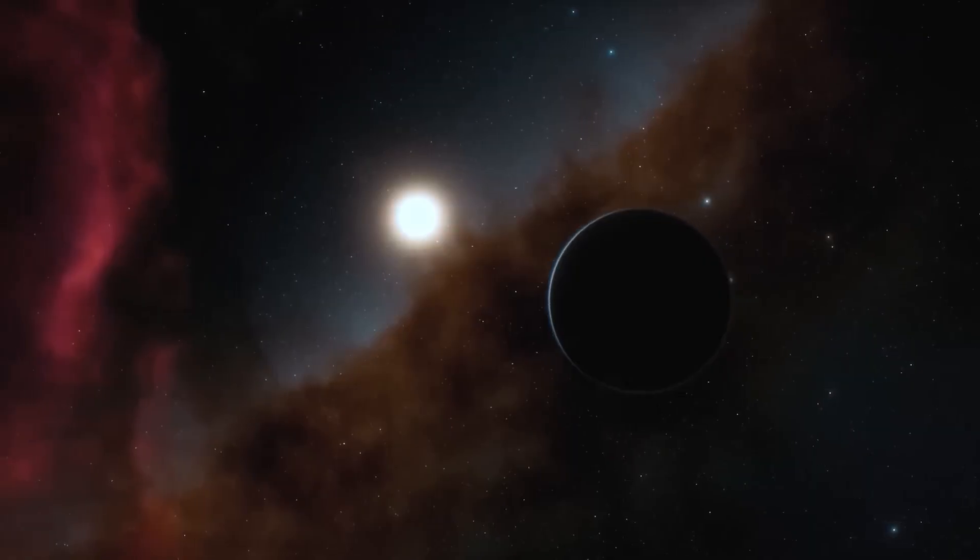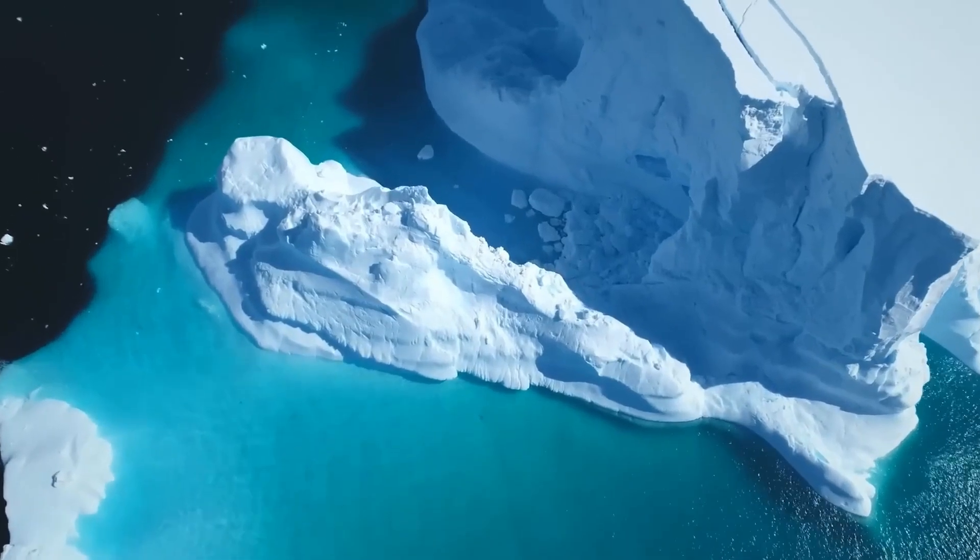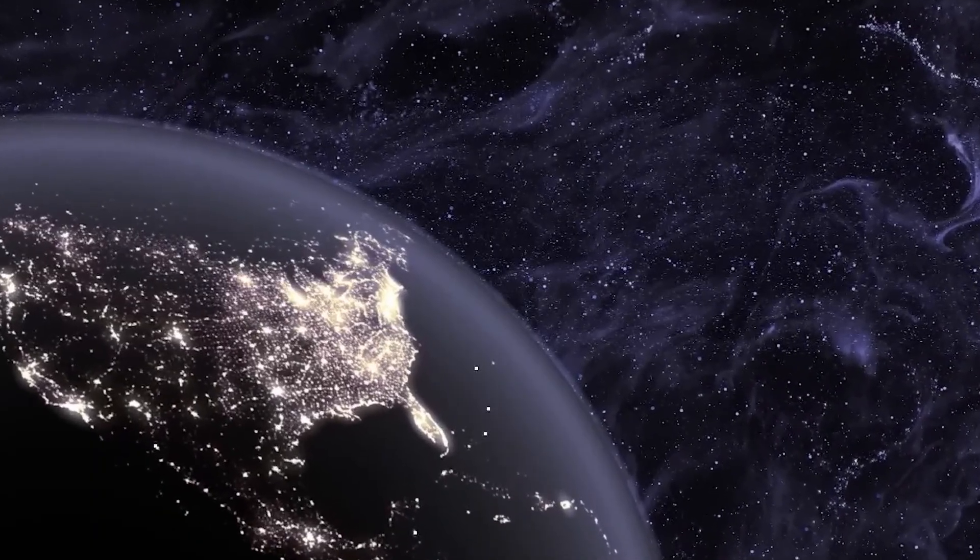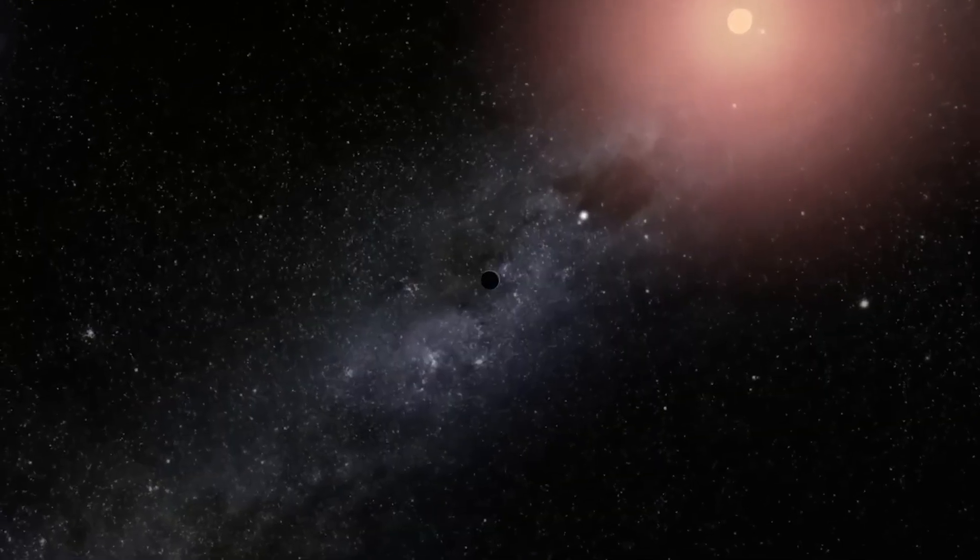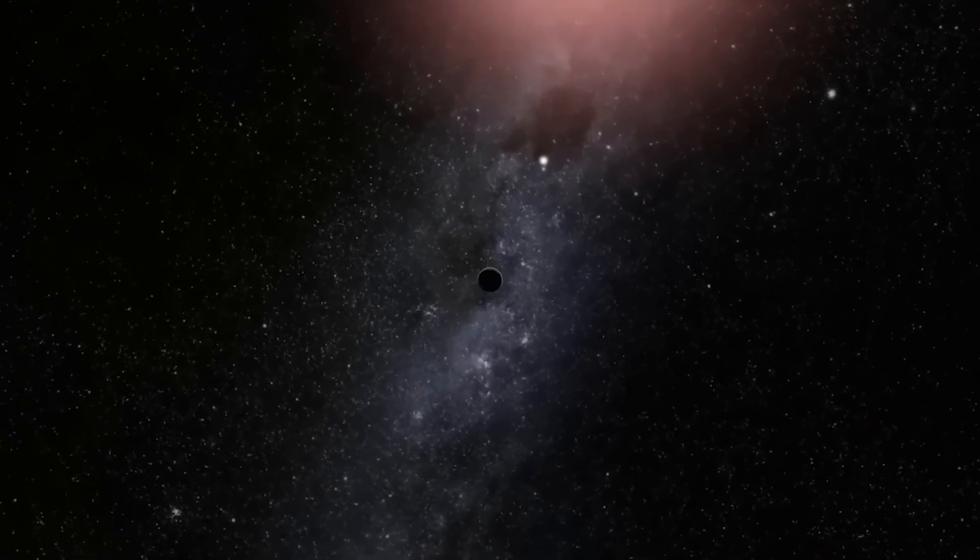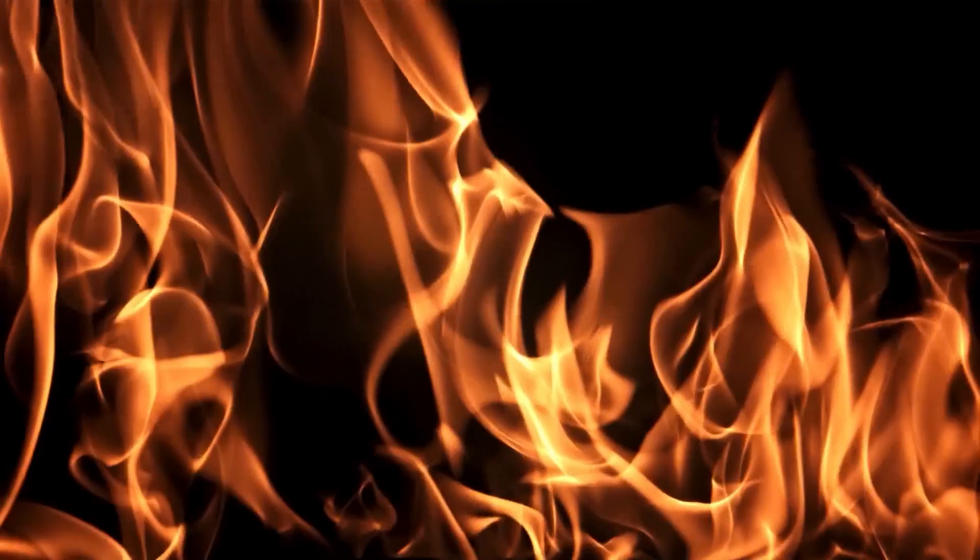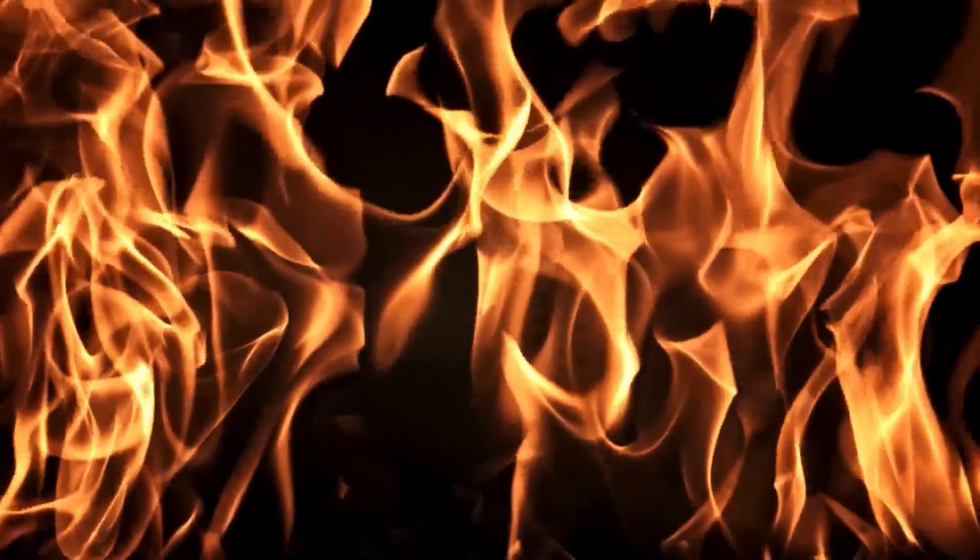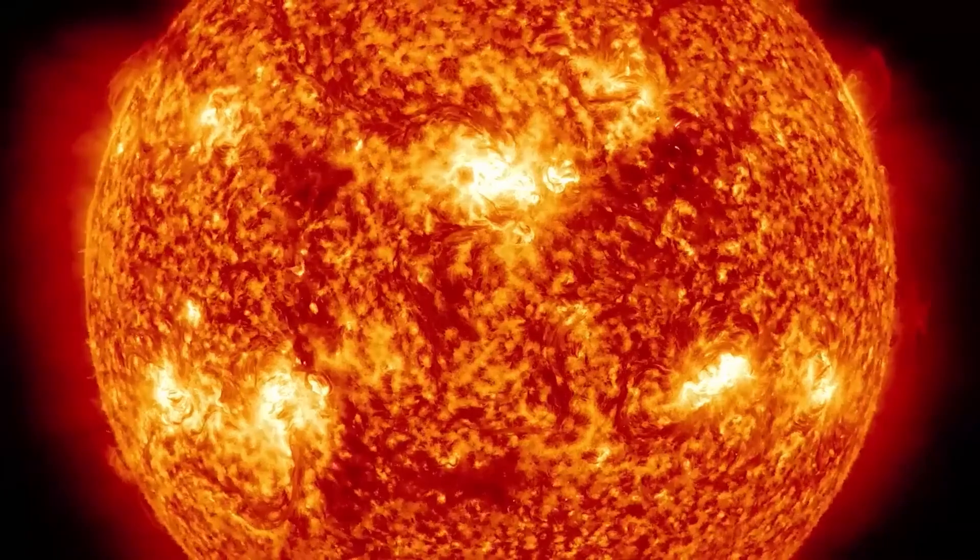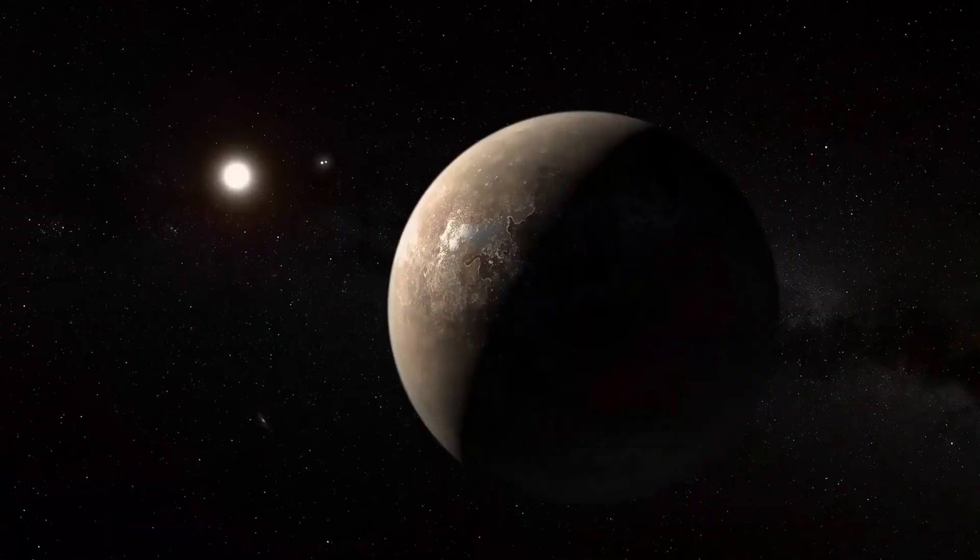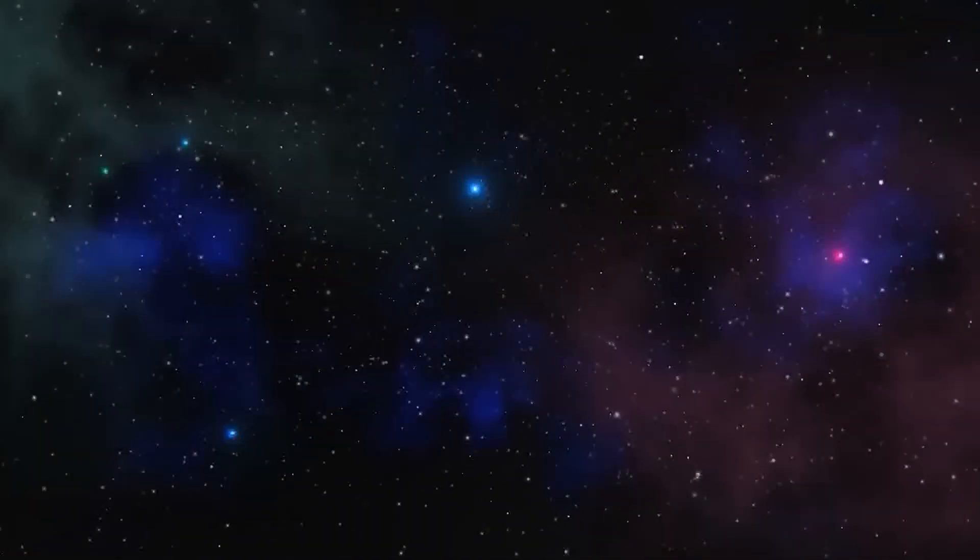The planet experiences significant temperature differences, which are largely determined by its makeup. For instance, if Proxima b lacks an atmosphere, the temperature difference between day and night would be extreme. Without the moderating effects of atmospheric gases or oceans, the day side would get extremely hot while the night side would fall into freezing temperatures. This dramatic temperature variation is a key area of interest for astronomers, as it offers insights into the atmospheric composition of Proxima b.